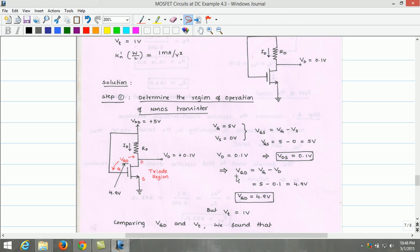The formula to estimate VGD is VG minus VD, where VG is 5 volt, VD is 0.1 volt. Therefore, VGD is 4.9 volt. From the circuit, we estimated VGD, which is found to be 4.9 volt.